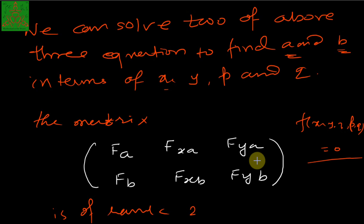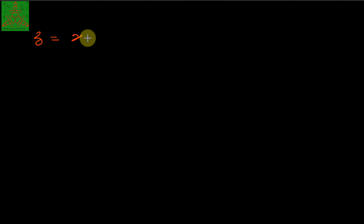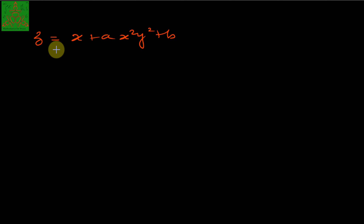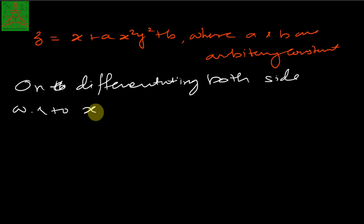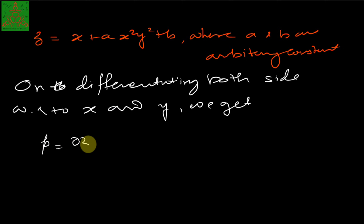We will understand this with an example. Consider z = (x + a)(x²y² + b), where a and b are arbitrary constants. The question is to obtain the partial differential equation which satisfies this equation. On differentiating both sides with respect to x and y, we get p = ∂z/∂x, which gives 1 + a·2xy².